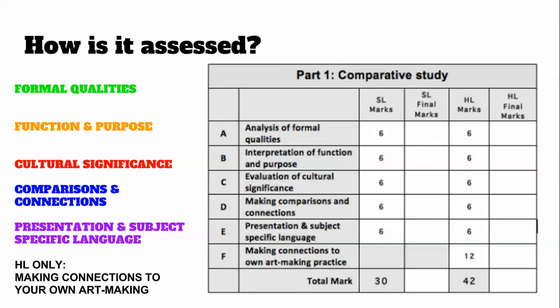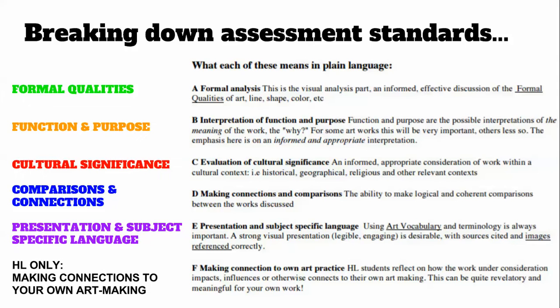Formal analysis is the visual analysis part — we're talking about elements, principles, composition, colors, line, shape, form, texture, and value. It covers how the artwork looks and the visual comparisons between the artworks. Those are the formal qualities.